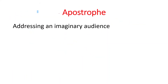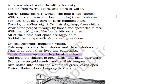Next is apostrophe. Apostrophe means addressing an imaginary audience. In this poem we can see the poetic device of apostrophe. Look at: 'Break, oh break open till they break the town.' Here the poet invokes the children to break open, so the children are the imaginary audience. The poetic device of apostrophe is used here.